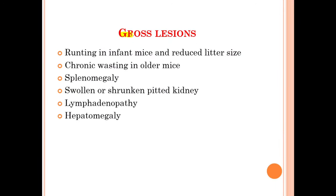Moving on to the gross lesions of lymphocytic choriomeningitis infection: there is runting in infant mice and reduced litter size, chronic wasting in older mice, splenomegaly, swollen or shrunken pitted kidney, lymphadenopathy, and hepatomegaly.